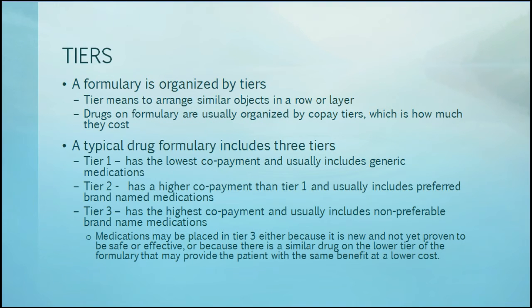A formulary is organized by tiers. Tier means to arrange similar objects in a row or layer. Drugs on a formulary are usually organized by co-pay tiers, which is how much they cost. A typical drug formulary includes three tiers. Tier 1 has the lowest co-payment and usually includes generic medications. Tier 2 has a higher co-payment than Tier 1 and usually includes preferred brand name medications. Tier 3 has the highest co-payment and usually includes non-preferred brand name medications.